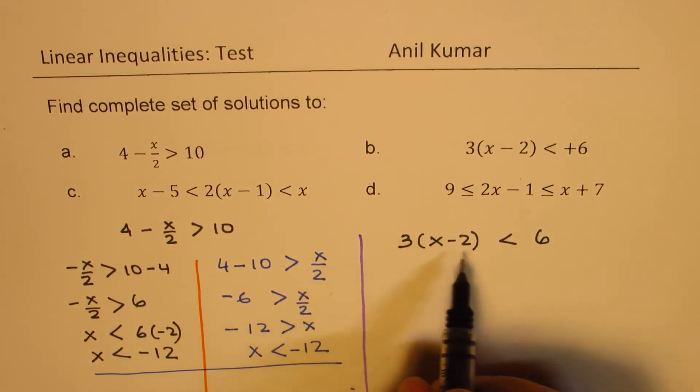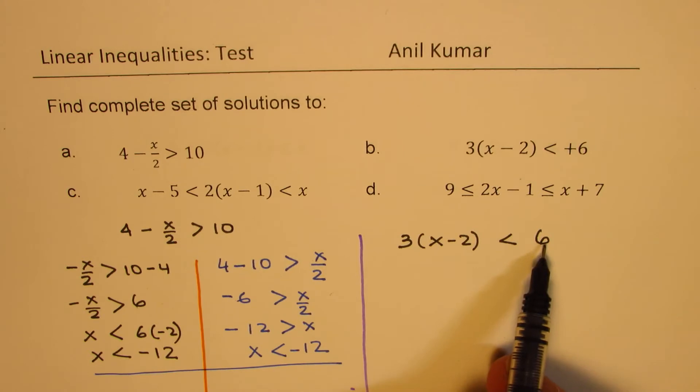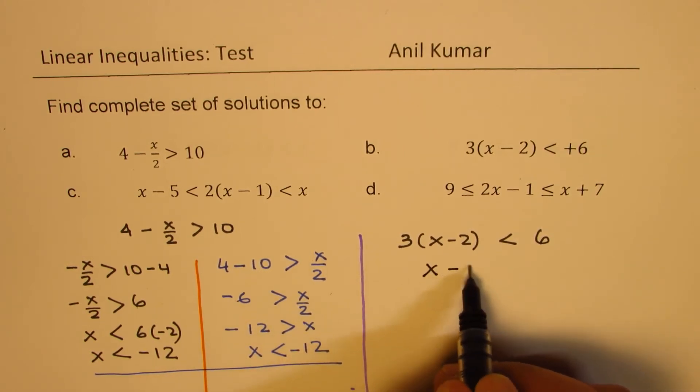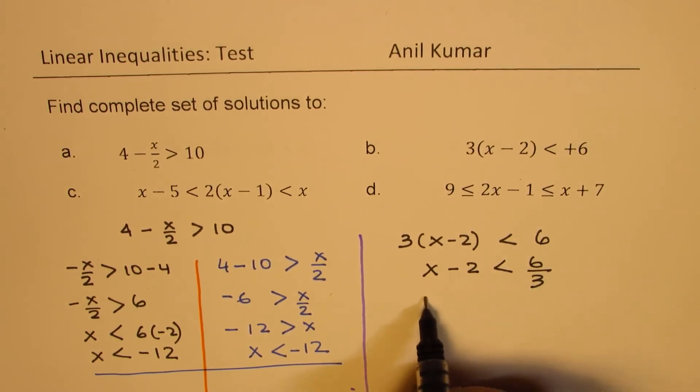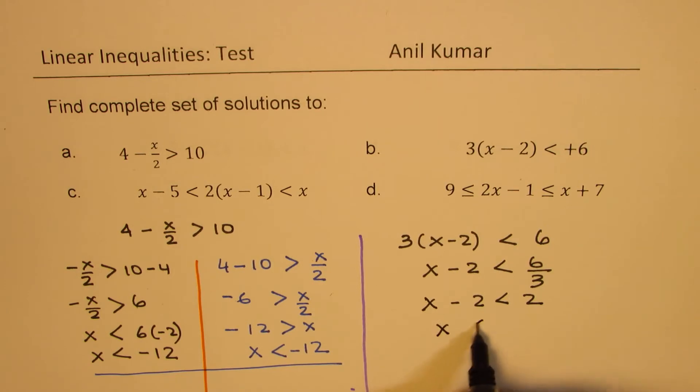Now the next one here is 3 times x minus 2 is less than plus 6. So let's open the bracket or we can just divide by 3. So we get x minus 2 is less than 6 divided by 3. That means x minus 2 is less than 2, or x is less than 2 plus 2. That means x is less than 4. So the solution is x is less than 4. So these are the two solutions for the given situation.